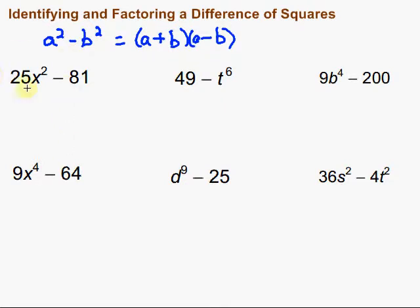Let's take a look at this first one. 25x squared minus 81. Well, is it a difference? Yes. So we're good there.